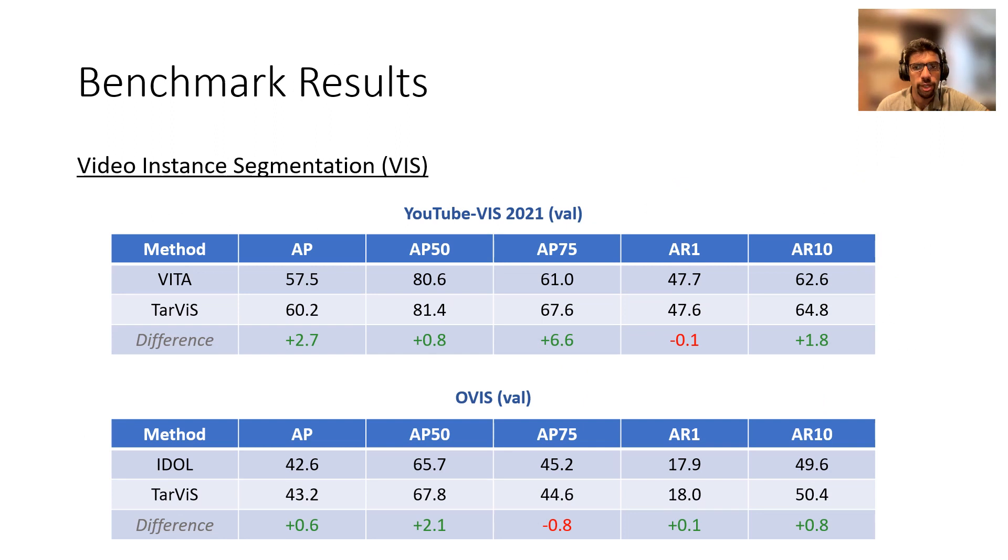Now let's discuss the benchmark results. For YouTube VIS, Tarvis outperforms the second best method by a healthy margin of 2.7% in terms of AP. For OVIS dataset, we are also SOTA but with a comparatively smaller margin.